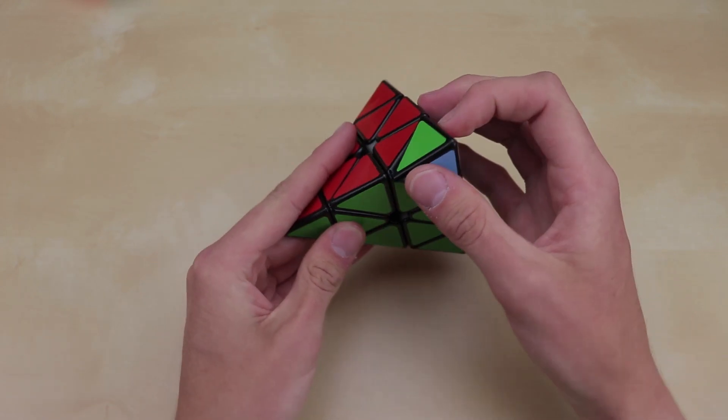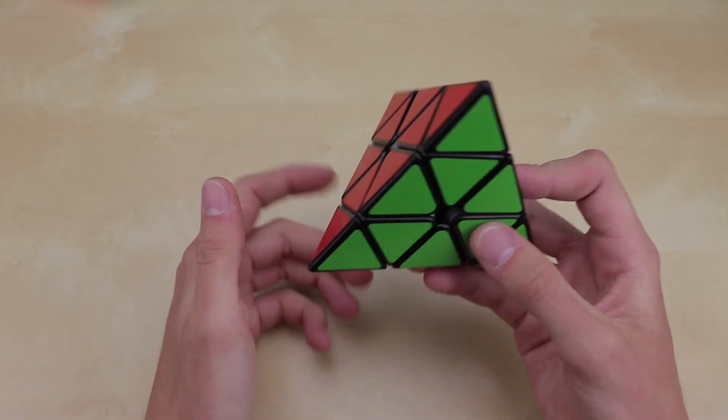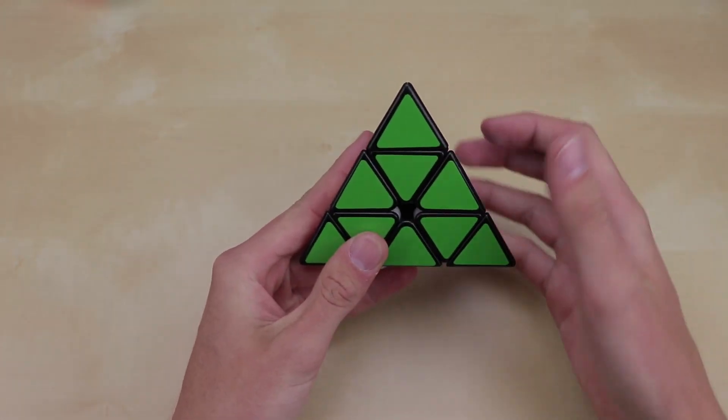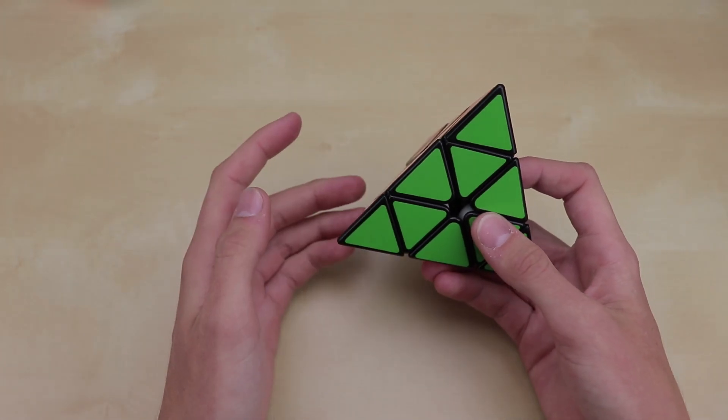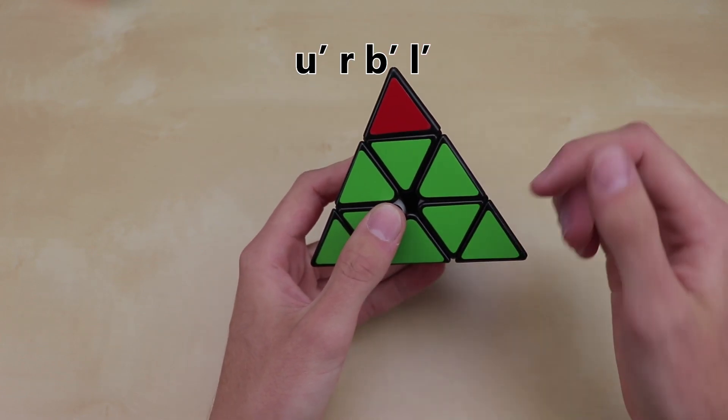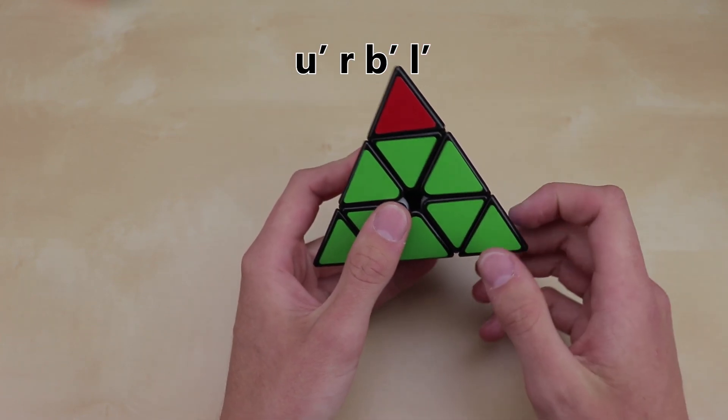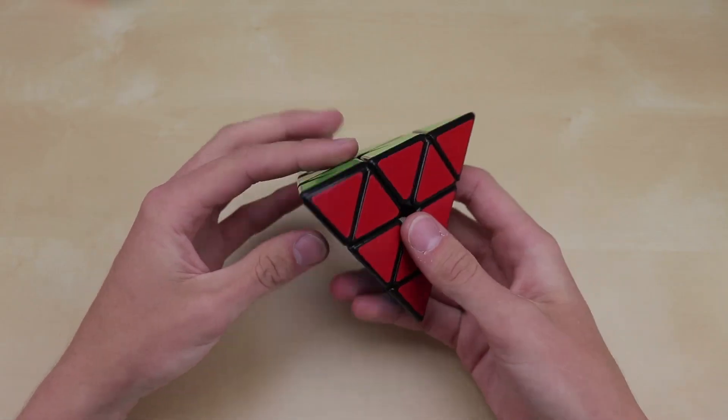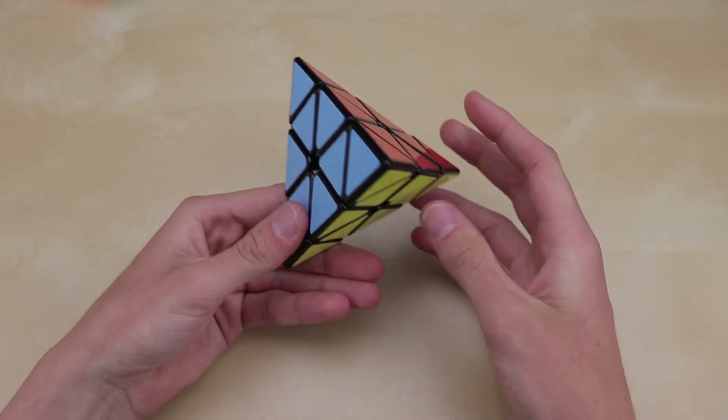Now, if you want to do one of these outer layer turns, or the tips, as they're called, the same letters and everything still apply for the four axes. You still have U, R, L, and B. But instead of using a capital letter, you use a lowercase letter. So, for example, you can have lowercase u prime, like that, just a little u prime, you can have little r, like that, lowercase b prime, lowercase l prime.